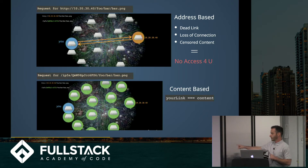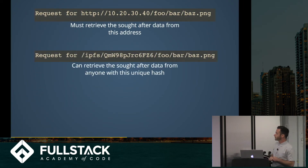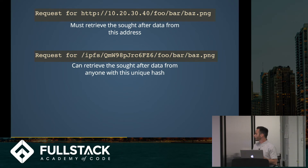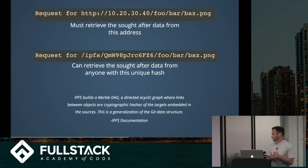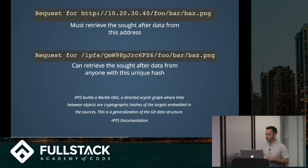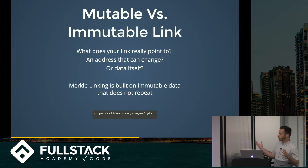So anyone can retrieve the sought-after data from anyone with this unique hash, given IPFS protocol. IPFS builds a Merkle DAG — directed acyclic graph — with links between objects as cryptographic hashes of the targets embedded in the sources. This is a generalization of the Git data structure. This brings up the concept of a mutable versus immutable link: what does your link really point to? An address that can change, or the data itself? Merkle linking is built on immutable data that does not repeat.